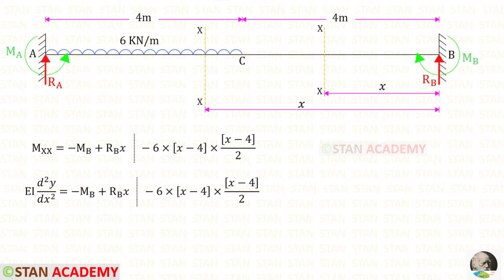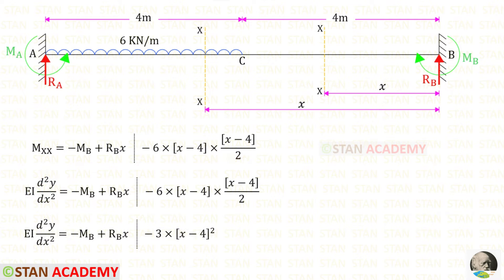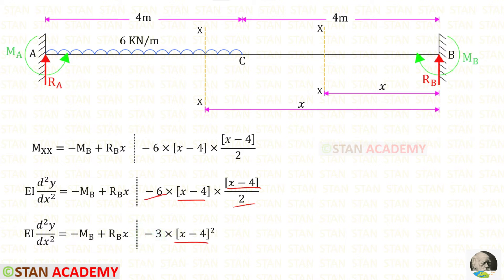Let us equate the moment with EI d²y/dx². For the UDL term, (x minus 4) into (x minus 4) gives (x minus 4) whole squared, and minus 6 upon 2 gives minus 3.